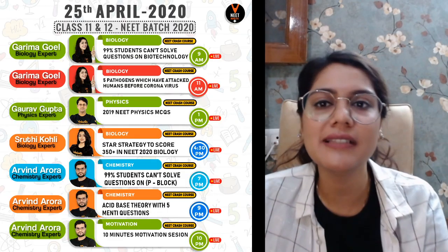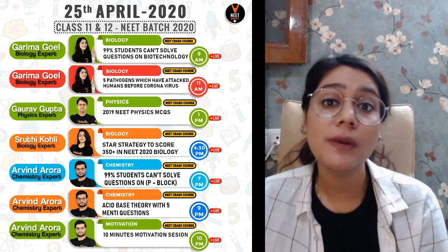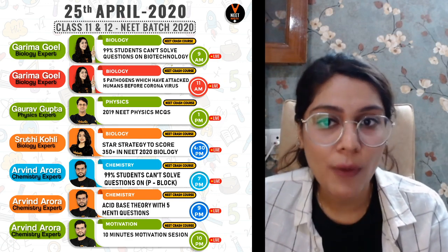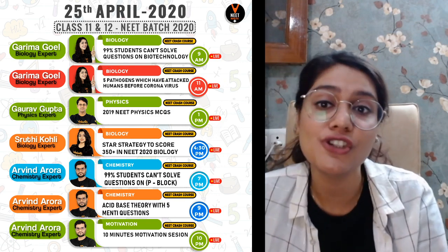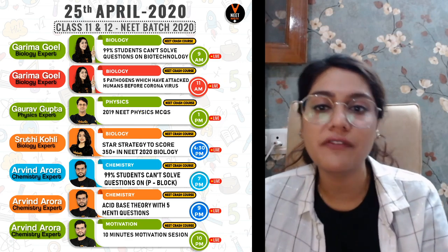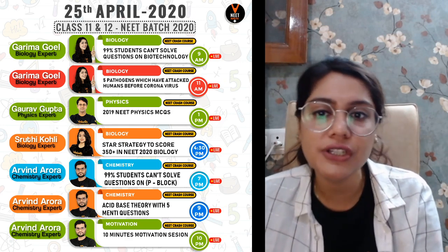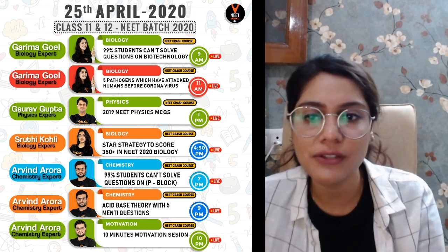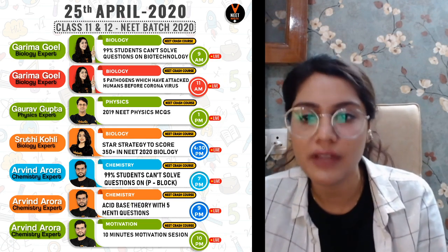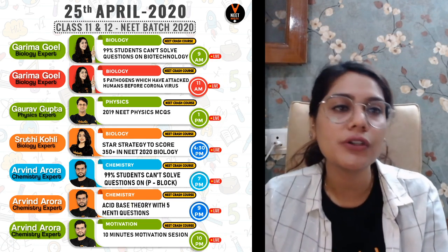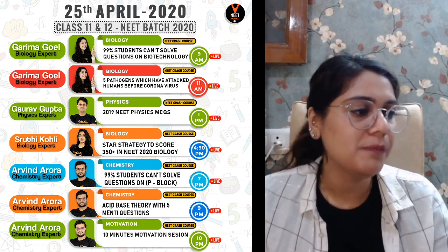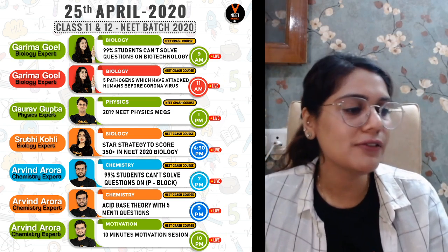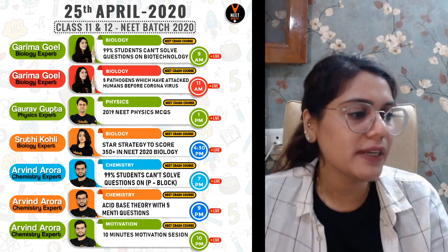Now this is the schedule of the day. At 11 o'clock we are going to do the history of pathogens session, then 1 o'clock you have a physics session, 4:30 you have a biology session, 7 o'clock you have a chemistry session, 9 o'clock another chemistry session, and 10 o'clock you have motivation. This is the super plan!